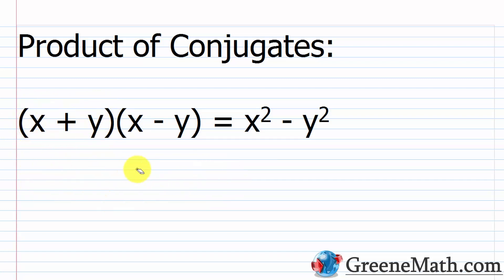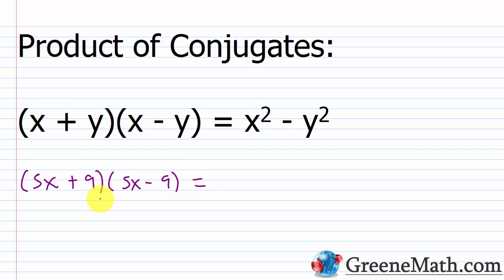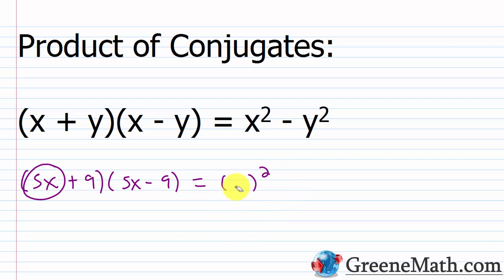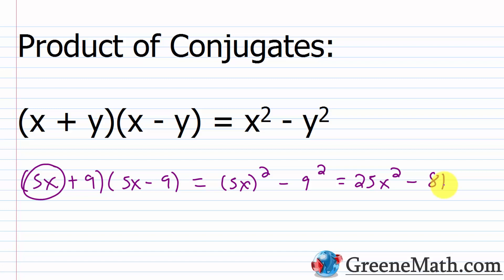For example, with 5x plus 9 multiplied by 5x minus 9, I don't need to foil this out. I square the first guy — 5x squared — which means squaring both the 5 and the x inside the parentheses, giving 25x². Then minus 9 squared, which is 81. So the answer is 25x² minus 81.